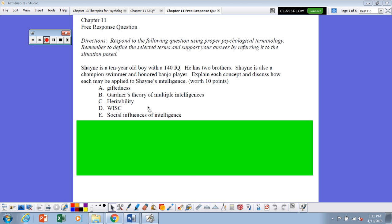Explain each concept and discuss how each may be applied to Shane's intelligence. So we're going to look at giftedness, Howard Gardner's theory of multiple intelligences, heritability, the WISC, and social influences of intelligence.